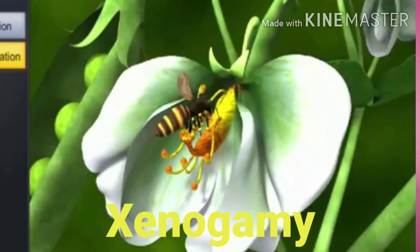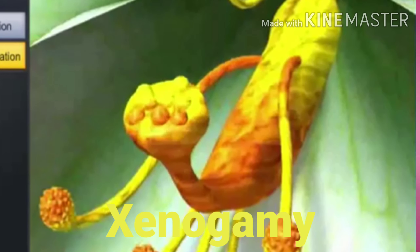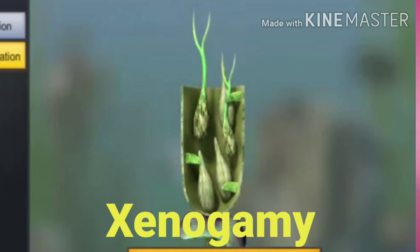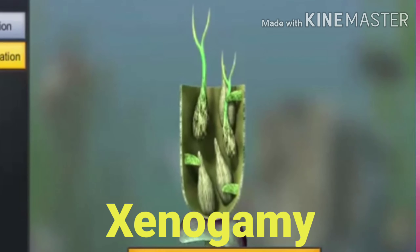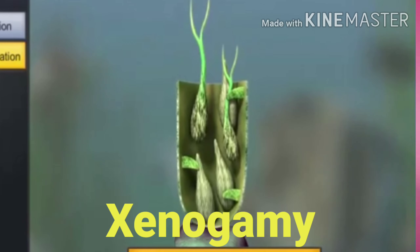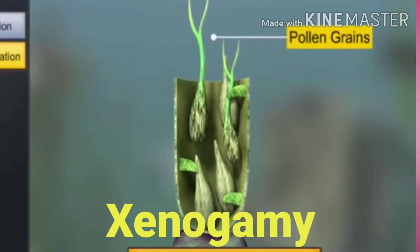Cross-pollination is otherwise known as xenogamy. The transfer of pollen grains from the anther to the stigma of a different flower of the same species on a different plant is called xenogamy or cross-pollination, and it is essential for bringing about variation.